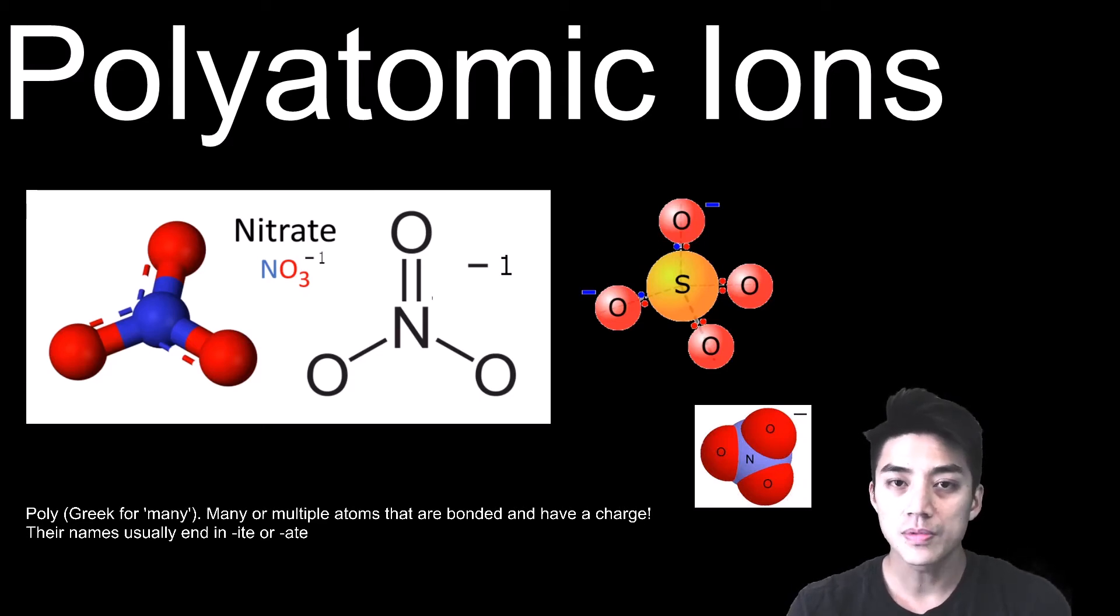Polyatomic ions are groups of atoms that are bonded together and collectively they have a charge. Usually they're negative, but there's a few exceptions where they have positive charges.